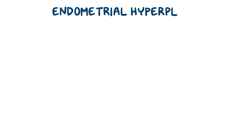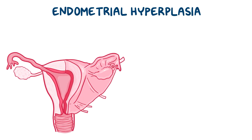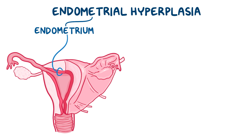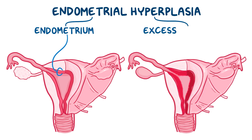With endometrial hyperplasia, endometrial refers to the endometrium, which is the inner lining of the uterus, and hyperplasia means increased growth. So endometrial hyperplasia means excessive growth of the inner lining of the uterus.